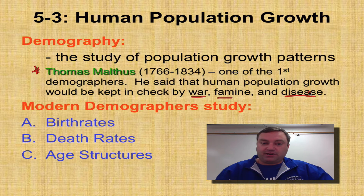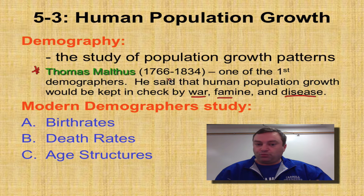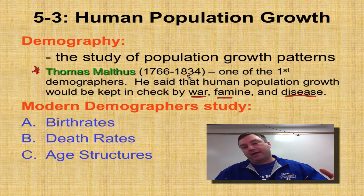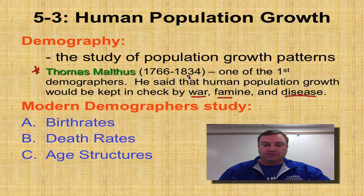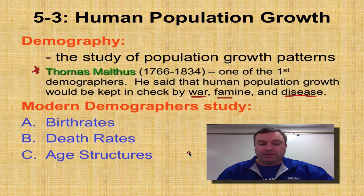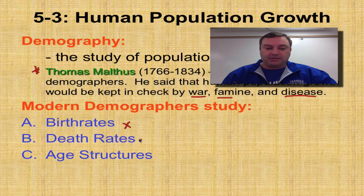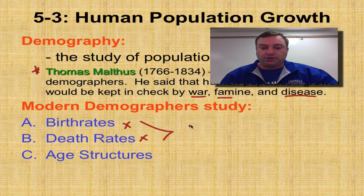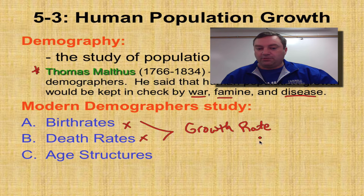Back in Thomas Malthus' era, we're still in exponential growth — it's right about the time he was passing away that exponential growth really takes off. Modern demographers are going to look at three things: birth rates and death rates. Put those two together and that helps you create the growth rate, which we've already covered in an earlier screencast.